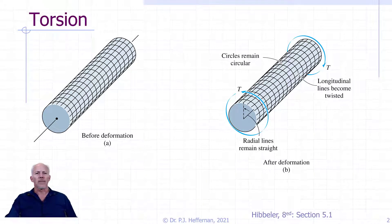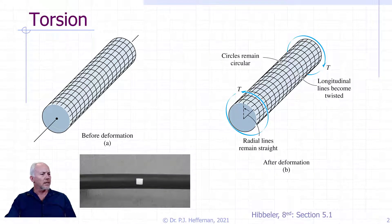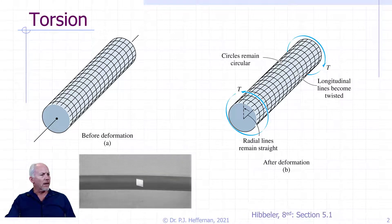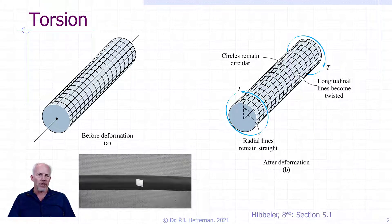Let's look a little bit closer at what the shape of these individual squares or rectangles before the twisting look like after. Here we see a rubber bar before and after it is torqued, and you see how the shape of that square changes. Where have we seen that shape before?